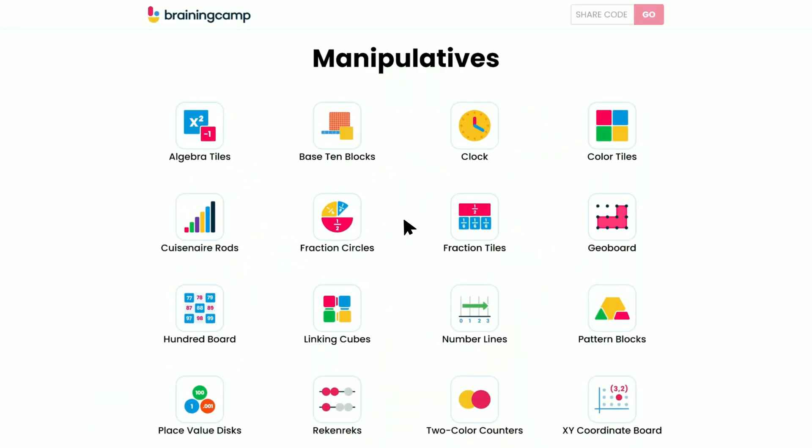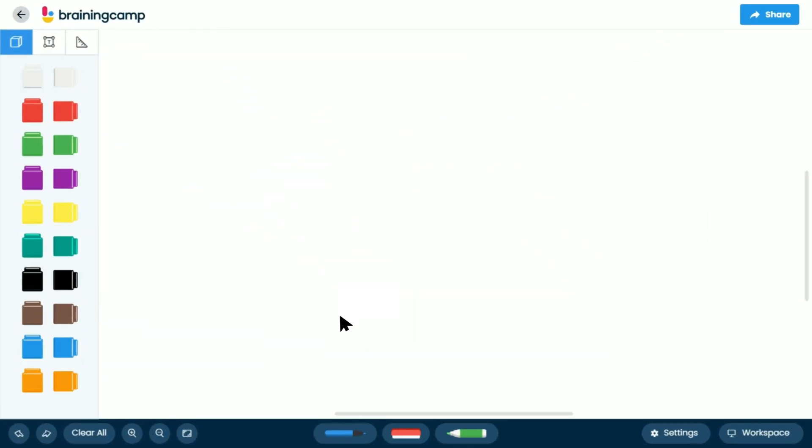Once logged in, click on the linking cubes manipulative. In the toolkit on the left, each linking cube is shown in two orientations.